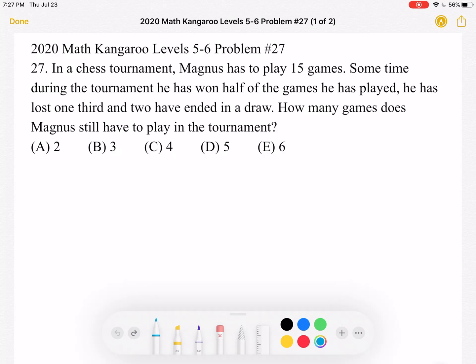How many games does Magnus still have to play in the tournament? A, 2, B, 3, C, 4, D, 5, or E, 6.